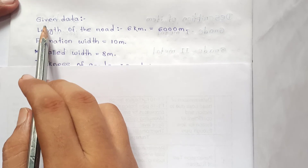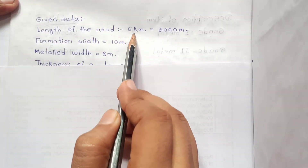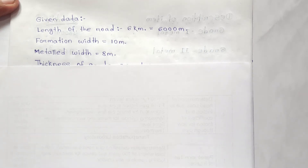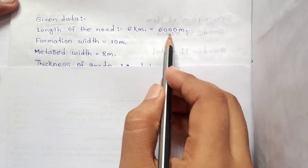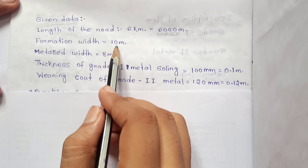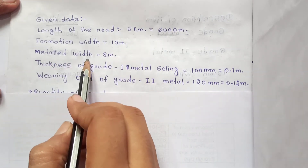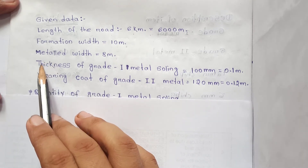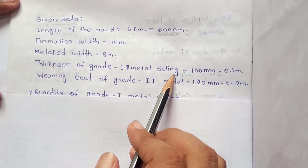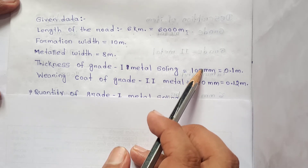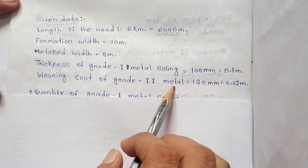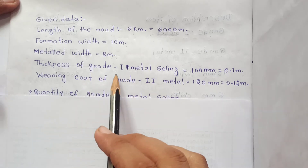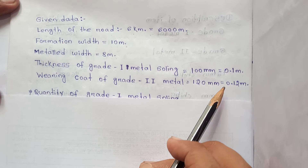From the given data: length of road = 6 km = 6000 m, formation width = 10 m, carriage width = 8 m. Thickness of Grade 1 metal soiling = 100 mm = 0.1 m. Wearing coat of Grade 2 metal thickness = 120 mm = 0.12 m.